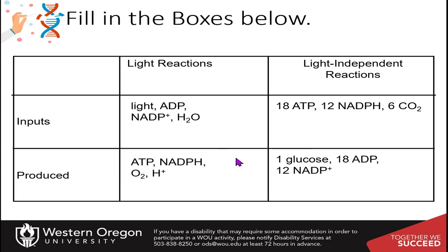There is also regulation based on protons getting pumped into the thylakoid space — raising the pH of the stroma causes the release of magnesium back into the stroma where the Calvin cycle is happening and the Rubisco enzyme is being activated.